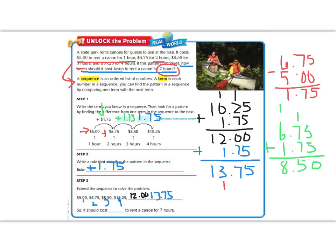And now we're going to continue our rule one more time and get to our number 7. So 1.75. 5 plus 5 is 10. So that's 0 carry the 1. 7 plus 7 is 14 plus 1 is 15, carry the 1, 3 plus 2 is 5, and then bring down the 1. So our last term in the sequence is 15.50. So in order for Jason to rent a canoe for 7 hours, it would cost him $15.50.